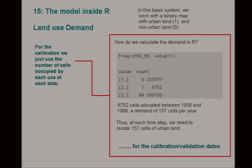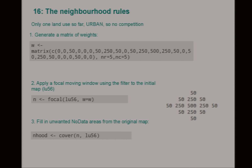How do we calculate it in R? Very simple frequency command. We can see we had 6,752 cells allocated to urban — that's a demand of 157 cells a year. So at each time step we need to locate 157 cells of urban land. This is our matrix for our neighbourhood rules, and we apply a focal moving window using the focal command. This is the window we saw before.